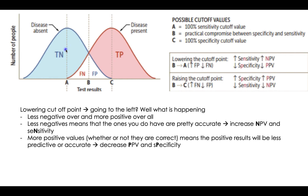There shouldn't be a lot of false negatives because we're lowering this value to the left. And the part I like about First Aid is: when you have an increase in negative predictive value, you know that sensitivity is going to go up. But if you're lowering this cutoff value, you have overall less negatives and more positives — that means you're going to have more junk on the positive side that's not accurate. So it's going to be less predictive, and you're going to decrease your positive predictive value. And if you decrease positive predictive value, you also decrease specificity — there's a P in both.